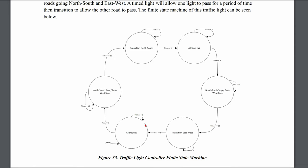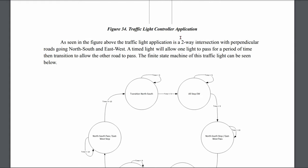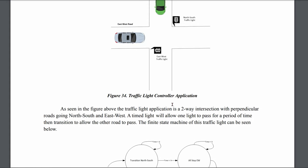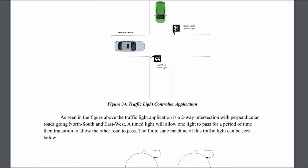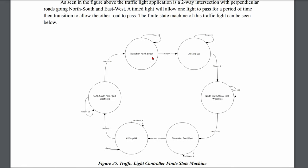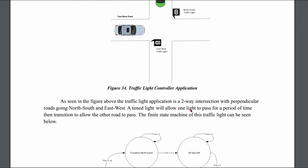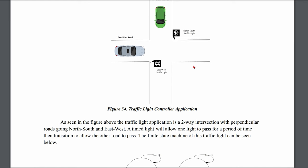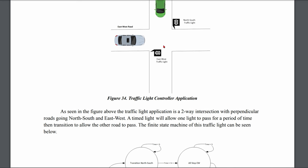We then have an all-stop north-south state, which is also the reset state. When our code first starts, the north-south is stopped and the east-west should be green. This runs for five seconds. Once the timer equals five we go to the next state: north-south pass, east-west stop, which runs for 10 seconds — the north-south light goes green and east-west is stopped. After 10 seconds we transition north-south, then do an all-stop east-west before transitioning back to north-south stop east-west pass. We're basically alternating between the two lights.